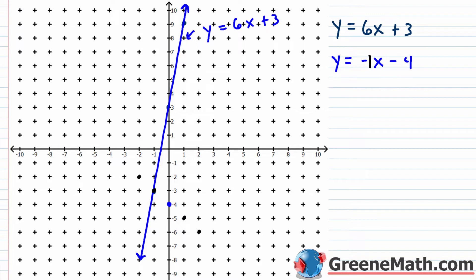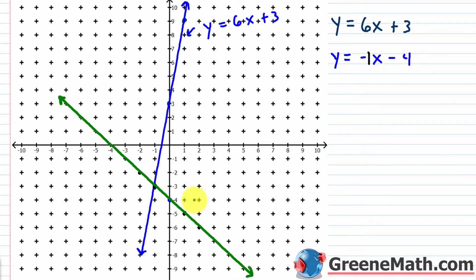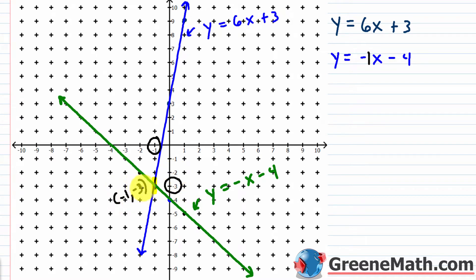I go down 1 to the right 1, or up 1 to the left 1. This is the graph for y equals negative x minus 4. Notice that there is a point of intersection at x equals negative 1, y equals negative 3 — that is, the point negative 1 comma negative 3. That point is significant because it lies on both lines, meaning it's a solution to both equations and therefore a solution to our system.